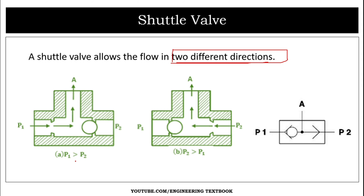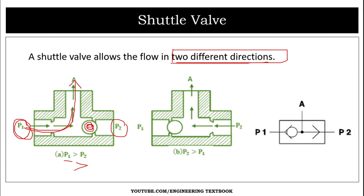There are two cases in the shuttle valve. Case one: if inlet port P1 pressure is greater than inlet port P2 pressure, then the ball moves in the opposite direction and oil will flow from P1 towards outlet port A.